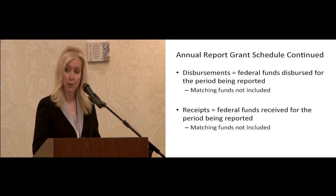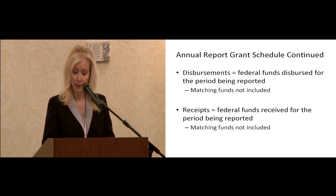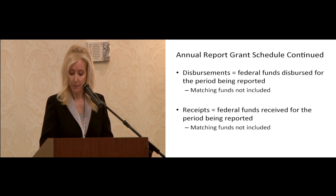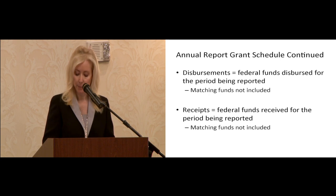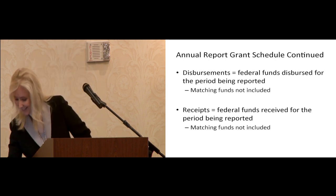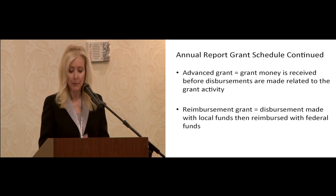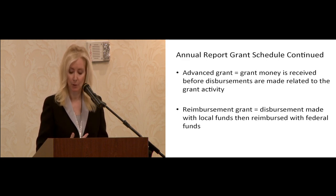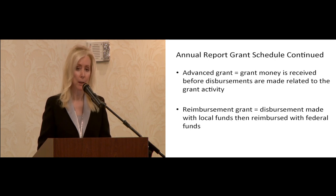There's really no big mystery to the receipt side either — this is new information being required, but it's straightforward. The instructions say: enter the amount of federal grant dollars that have been received for the period being reported. You'll only enter the federal funds receipted and do not include any matching funds. Now we get into a little bit more of the important side.